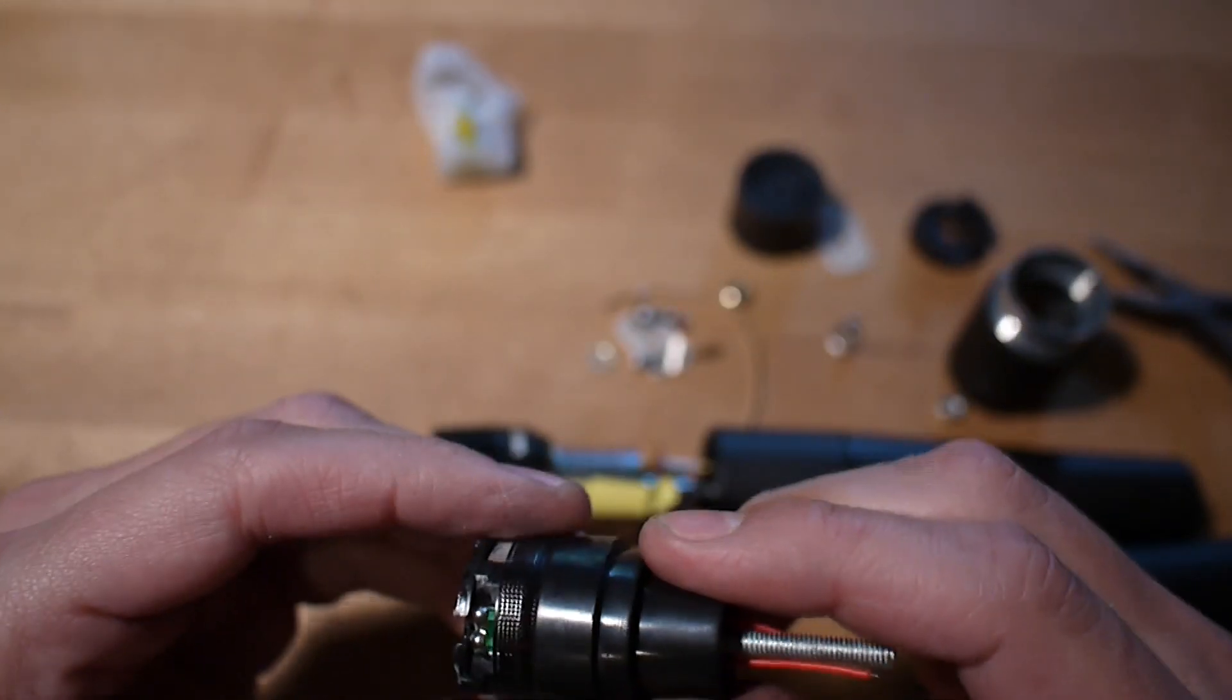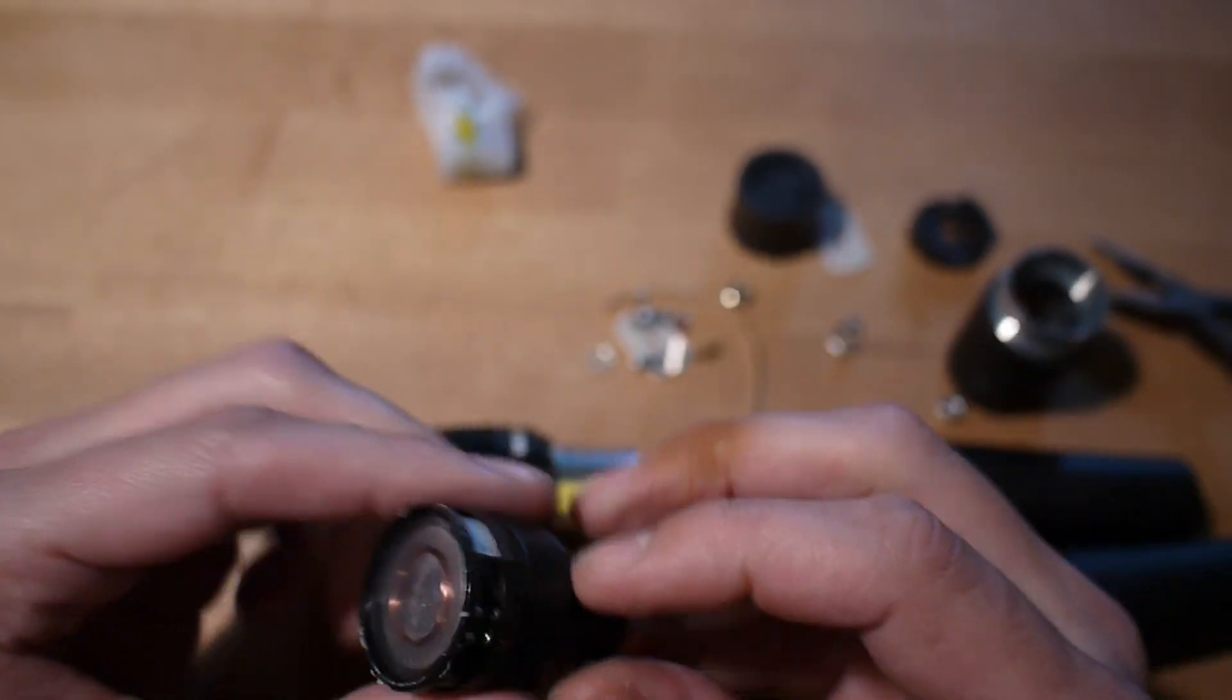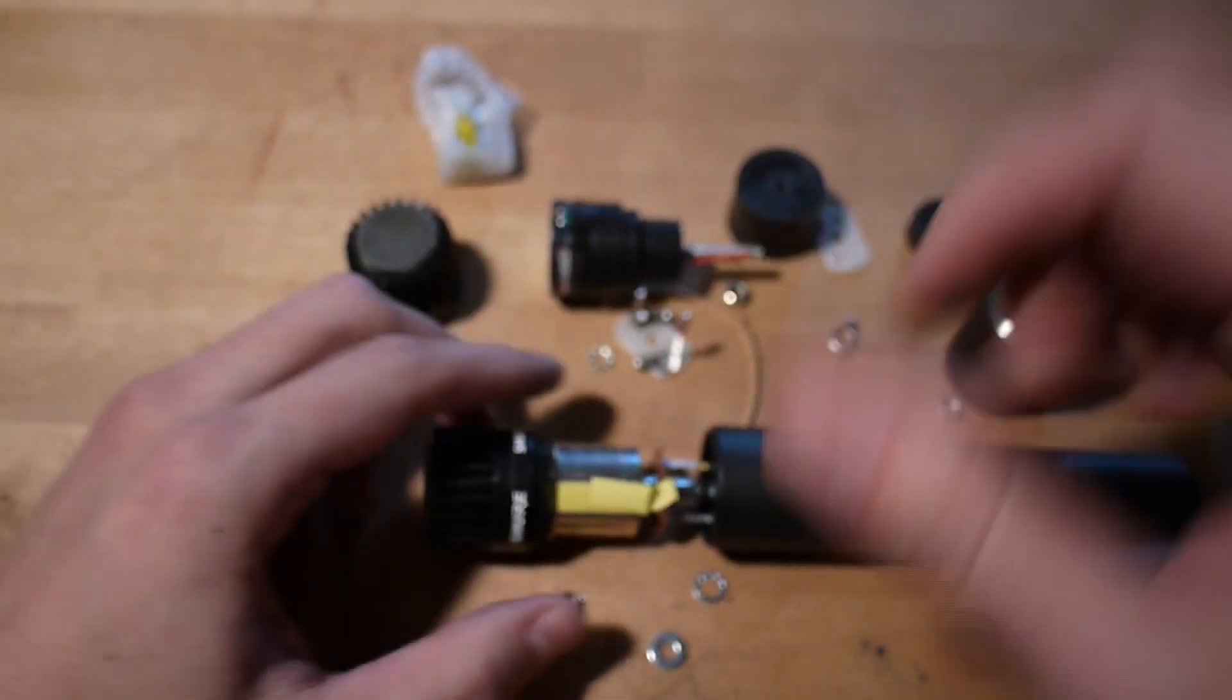This is why you can't spin this around. And that is what a fake SM57 looks like.